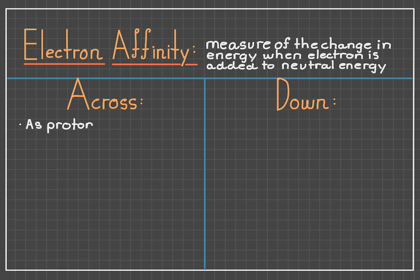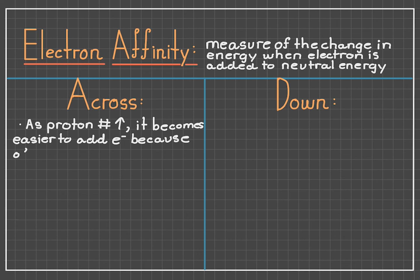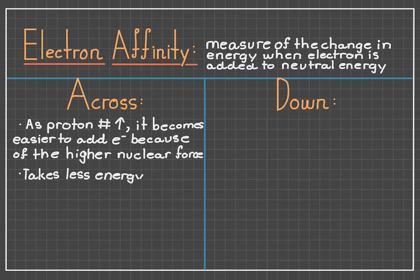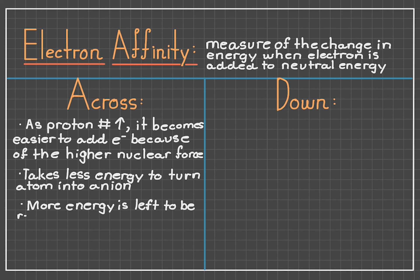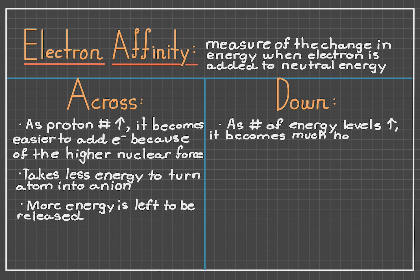Now, let's talk about electron affinity, which is the measure of the change in energy when you add an electron to a neutral atom. As we go across, we know that the protons increase, and it becomes much easier to add the electron because the nucleus is already pulling it in. Therefore, it takes much less energy to turn the atom into an anion by integrating the electron into the atom. This means that there's a lot more energy left to be released, and so electron affinity is greater as we travel to the right.